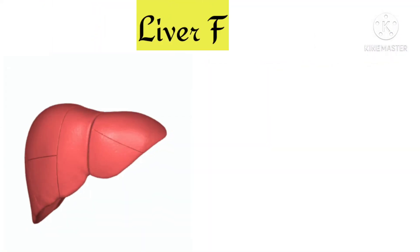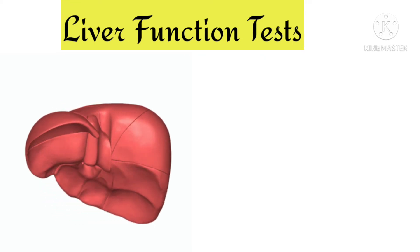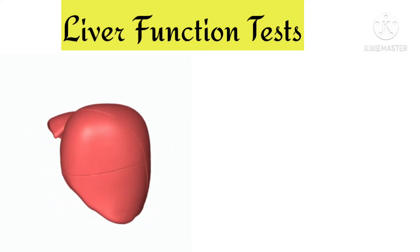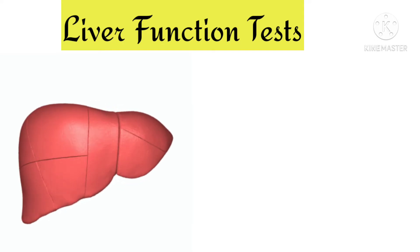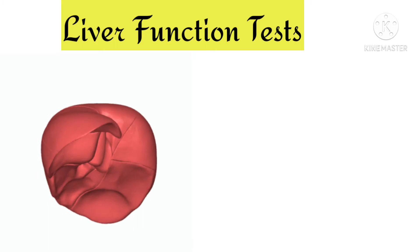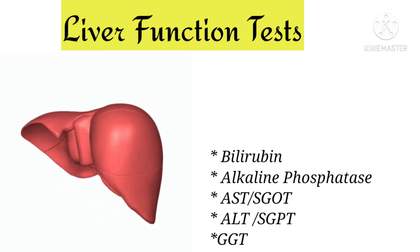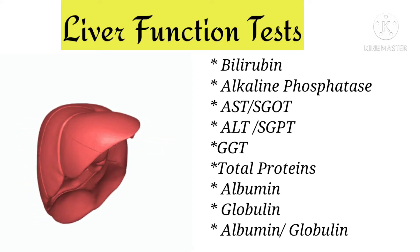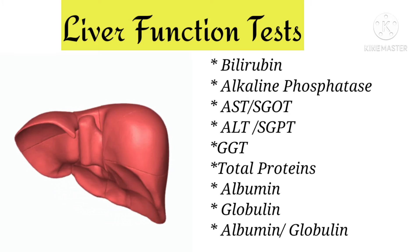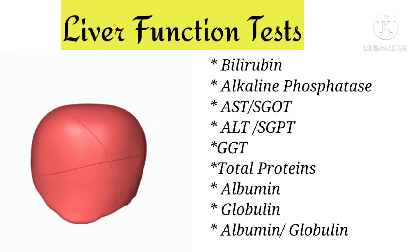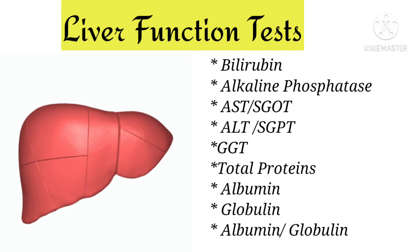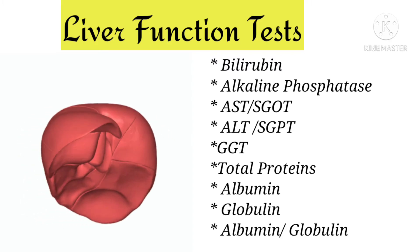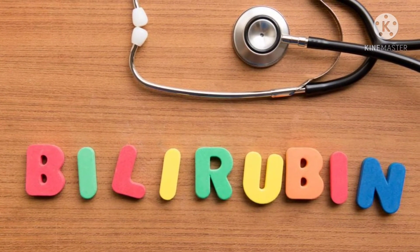Today's topic of discussion is liver function tests. Liver function tests are used to assess the functionality of the liver and to determine abnormalities or diseases associated with it. In liver function tests, we assess bilirubin levels, alkaline phosphatase, AST (aspartate transaminase or SGOT), ALT (SGPT), GGT (gamma glutamyl transferase), total proteins, albumins, globulins, and the albumin-globulin ratio.